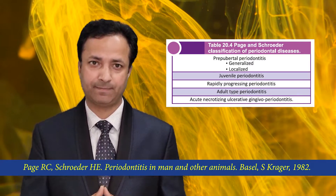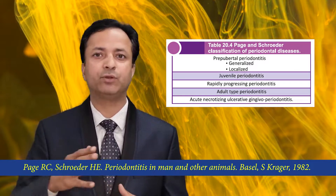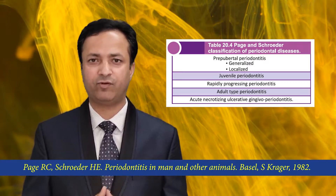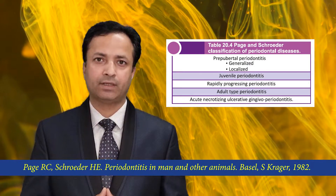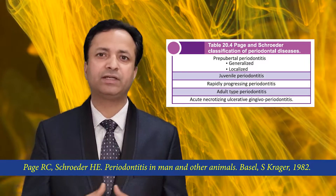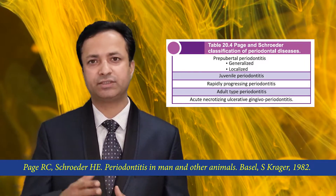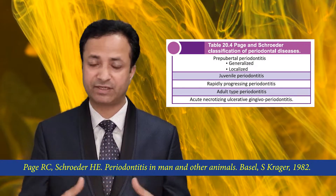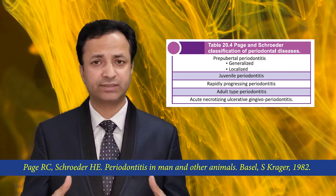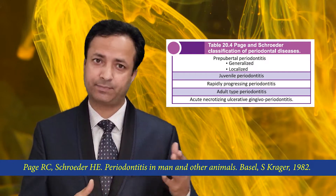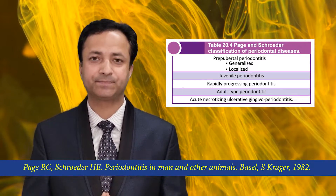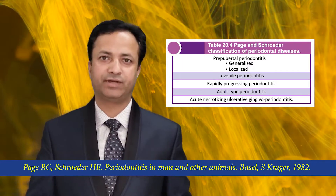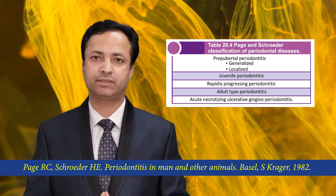Juvenile periodontitis had a circumferential onset, and the patient classically had incisor and first molar involvement. Most patients were successfully treated by non-surgical and surgical periodontal therapy, but certain patients who did not respond were referred to as refractory patients. The patients also had peripheral neutrophil and monocyte defects.